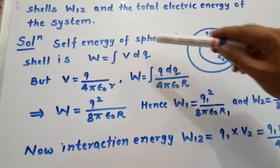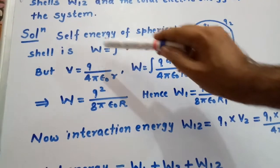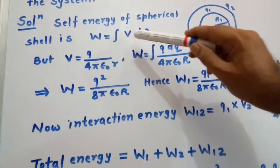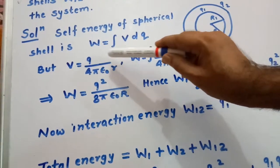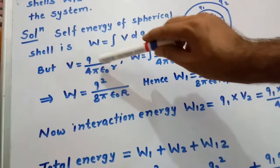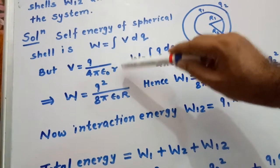Now, self energy of a spherical shell is given by w equals the integration of potential difference into dq. Since potential difference is given by q upon 4π epsilon naught r, we put this value here.